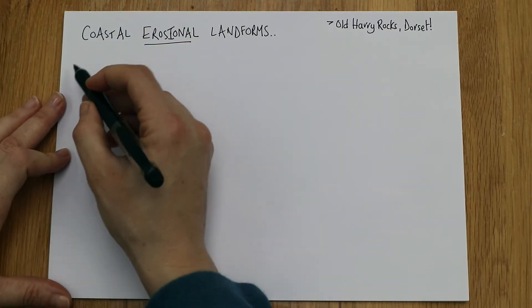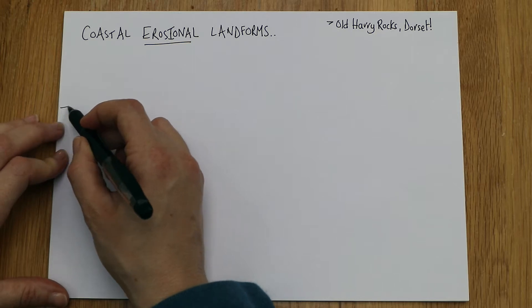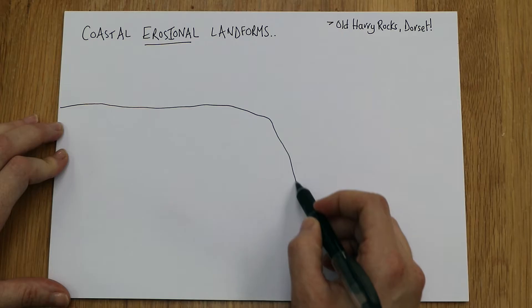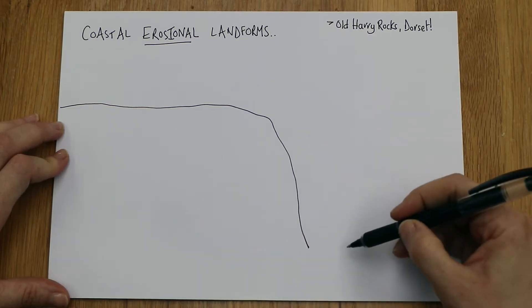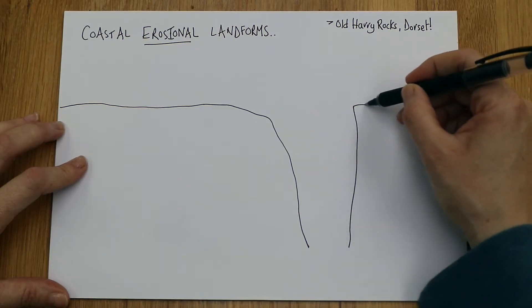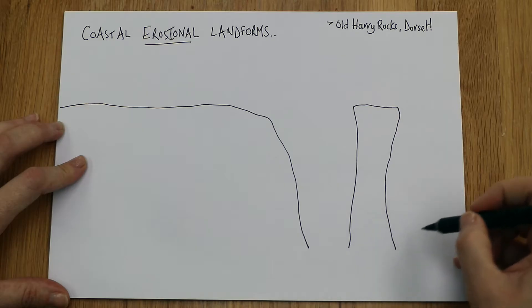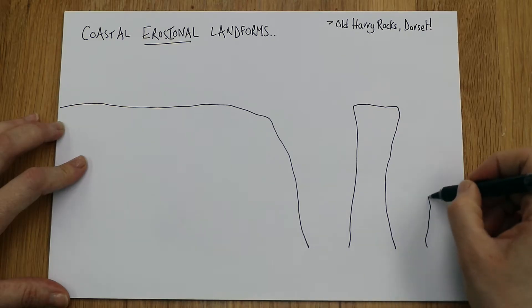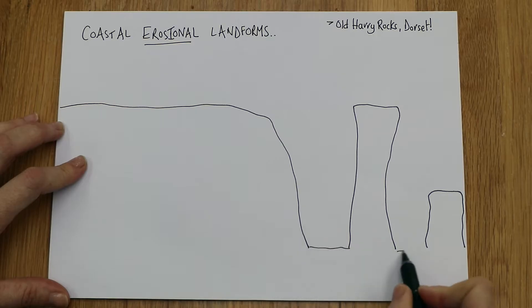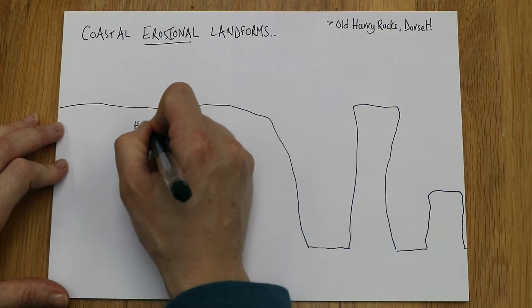To do this effectively, we need to draw a headland — a rough headland shape heading down to the water — and then we'll have a stack over here on a similar shape, and then a stump, just quite a small stump. So here we've got our headland.